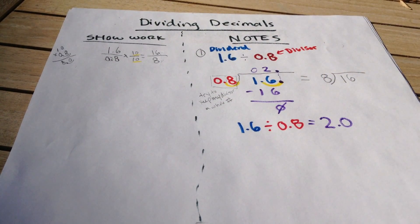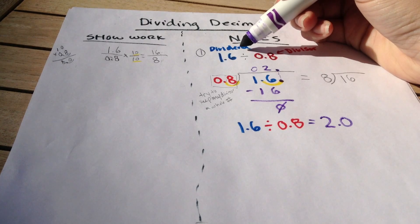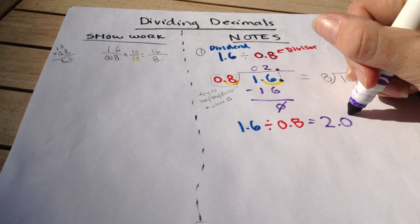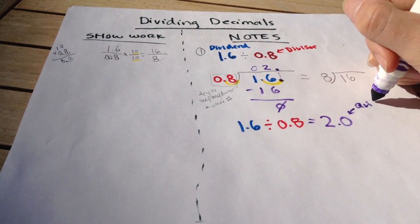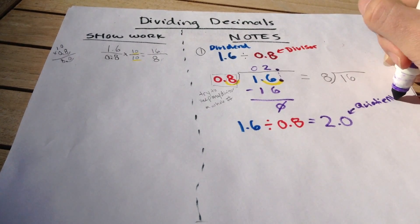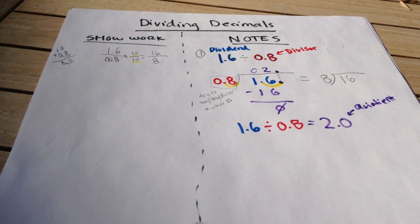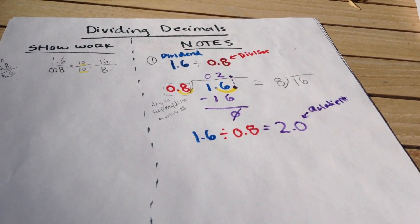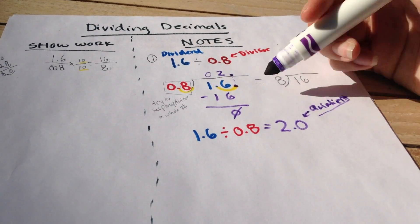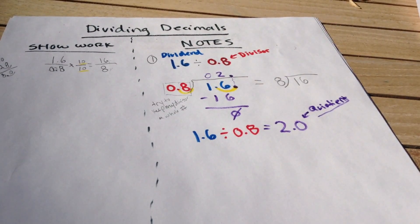Now we know that the dividend is this number and that it's being divided by the divisor, and our answer is called the quotient. This is telling us what two numbers are after they're divided. That is our final answer.